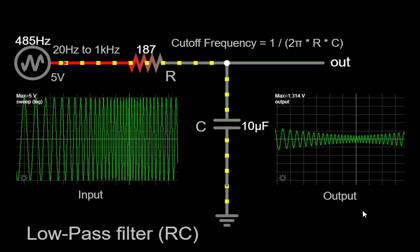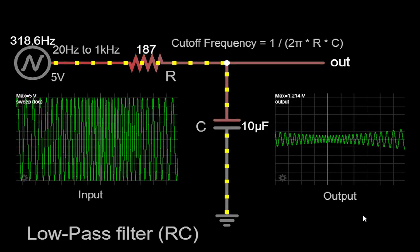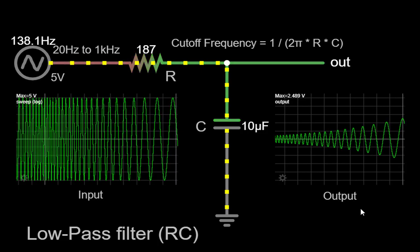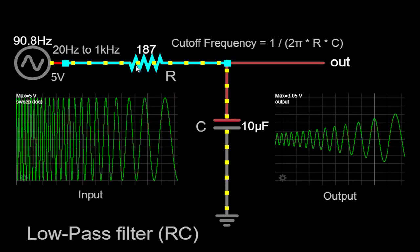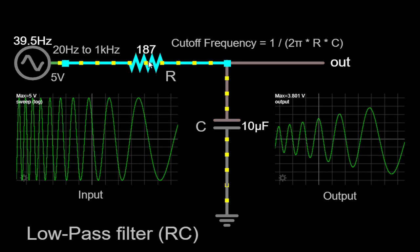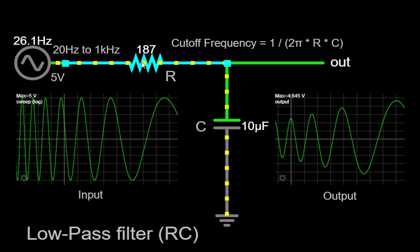To understand the behavior of the low-pass filter in the RC circuit, we need to delve into the electrical properties of the components involved. The resistor, characterized by its resistance value of 187 ohms, provides a predictable opposition to the flow of current.